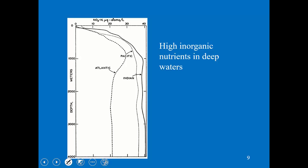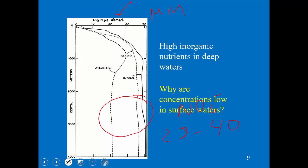This diagram emphasizes that nutrients are highly concentrated in deeper waters. The units are a bit old-fashioned but basically the same as micromoles. In deep waters, you can see as much as 20 to 40 micromoles of nitrate. There's some variation among the oceans — it involves the age of that deep water; it's relatively young in the Atlantic Ocean and much older in the Pacific and Indian Ocean. The key point is that you see really high concentrations of nitrate deep down and much lower concentrations in surface waters.